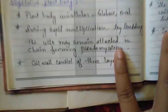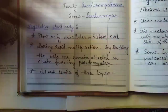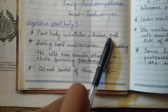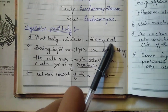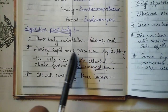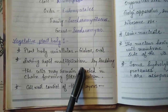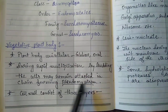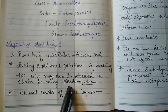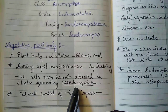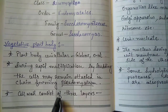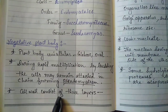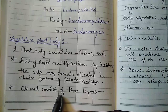The plant body is unicellular, which is globose, oval, or elliptical, and uninucleate. During rapid multiplication by budding, the cells may remain attached in chains, forming pseudomycelium. The cell wall is the outermost region of the cell and performs the function of protection.